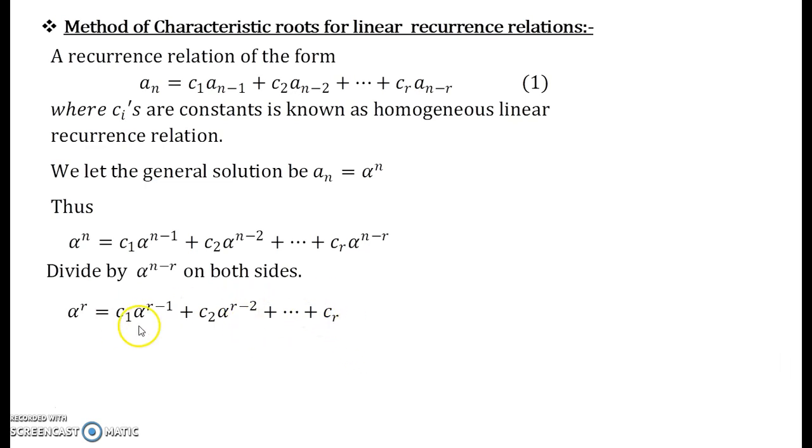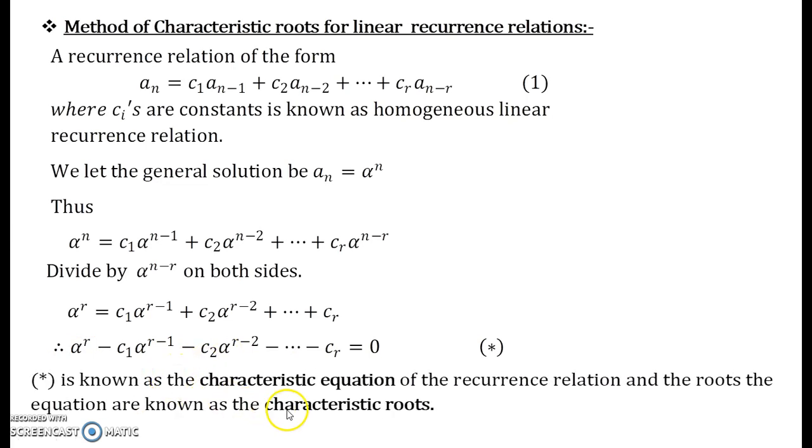Now you shift all these terms onto the other side. So what you get is α^r - c₁α^{r-1} - c₂α^{r-2} - ... - c_r = 0. This equation (*) that you see is known as the characteristic equation. And the roots of this equation would be known as characteristic roots. So that is what I have written it over here.